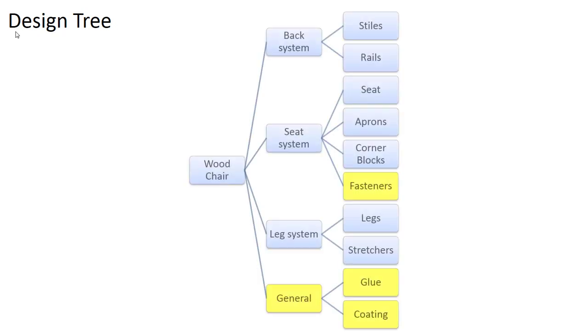Before you call your design tree finished, you want to think carefully about whether you've thought of everything. For this chair, we've left out a few things — we've forgotten about the fasteners used to attach those corner blocks, and we haven't considered the glue holding the joints together, as well as the coating on the surface, whether it be paint, varnish, or something like that. These are also important components to consider in your design tree.